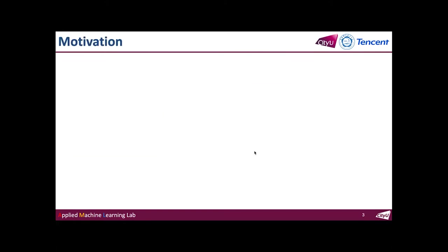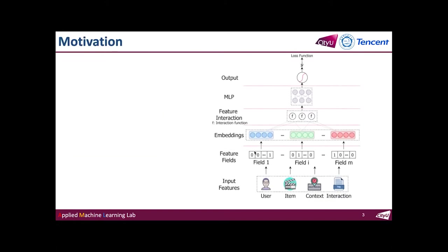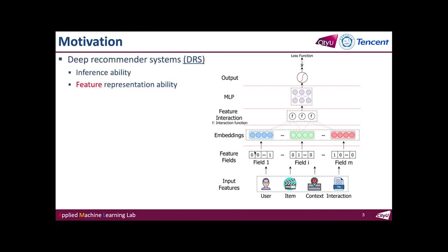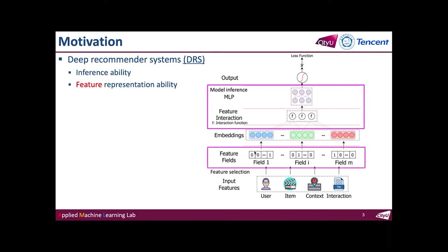Recently, deep recommender systems have attracted a lot of attention from both industry and research communities. With strong feature representation and inference capacities, they could accurately capture user preference. However, existing works spend a lot of effort on enhancing inference ability while neglecting the feature selection process. They just feed all possible feature fields to recommendation models, or manually select some informative ones by human experts. The former leads to excess inference time and even worse performance, while the latter requires plenty of expert knowledge and labor effort.